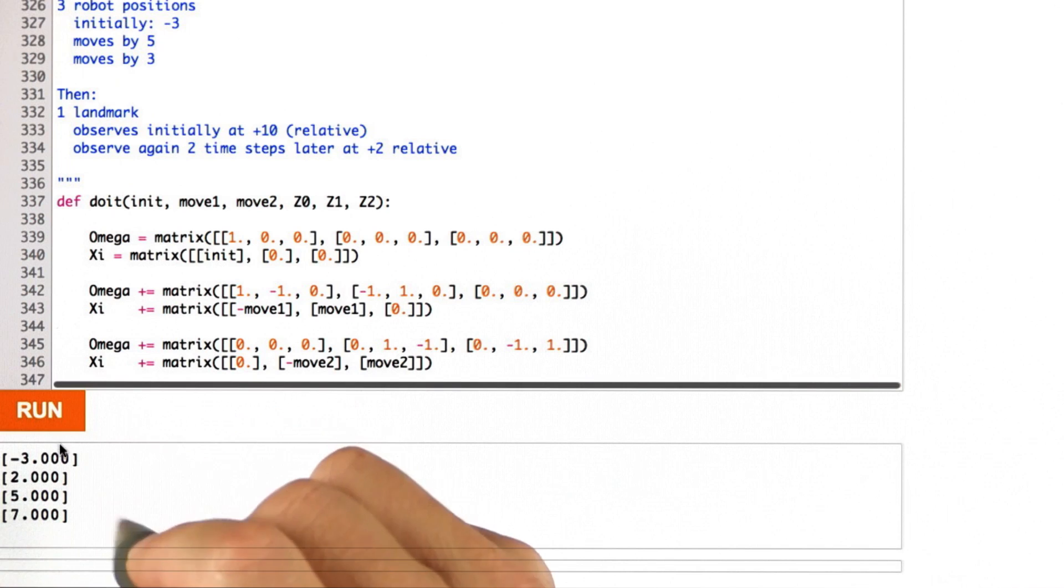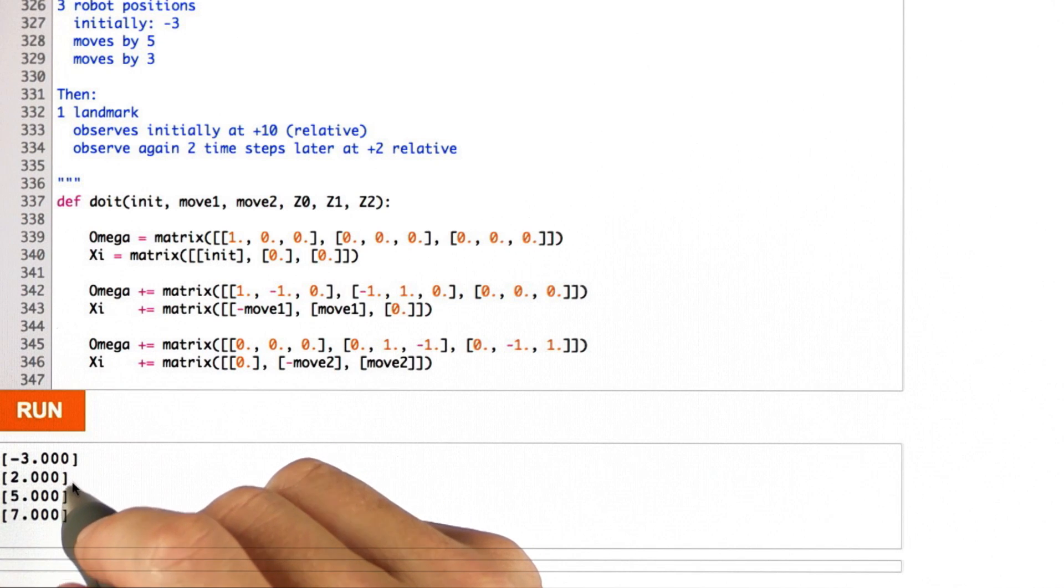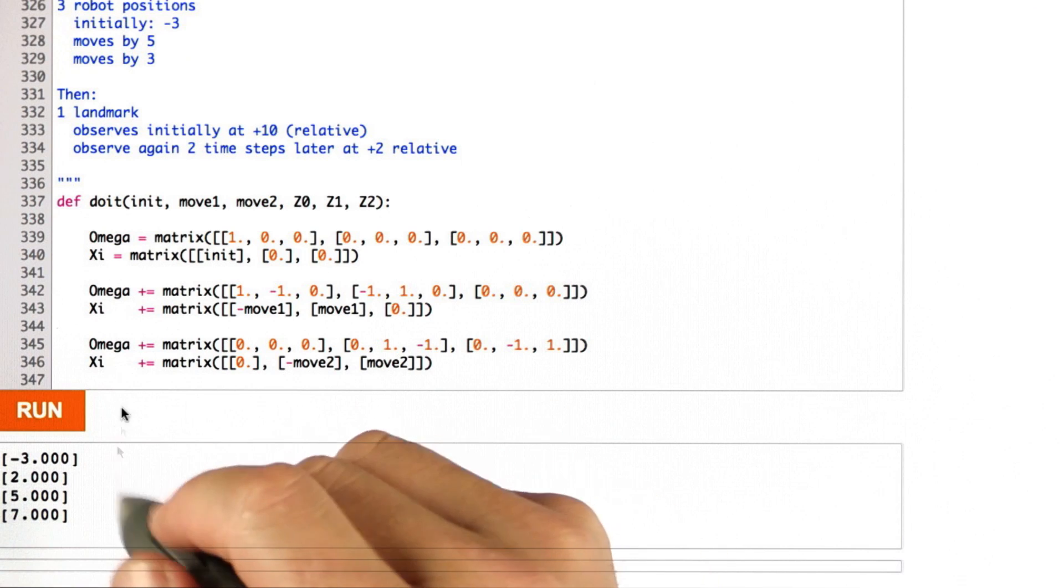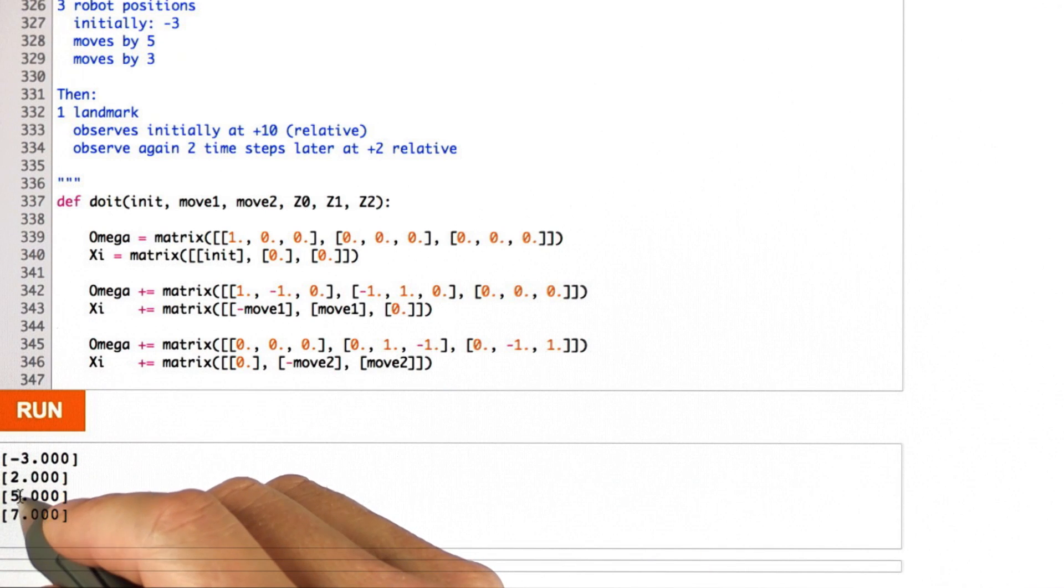And then when you run it, what comes out is this result over here, minus 3, 2, 5, and 7. And I want you to do this where minus 3 and 2 and 5 is the robot path, and 7 as before is the landmark location.